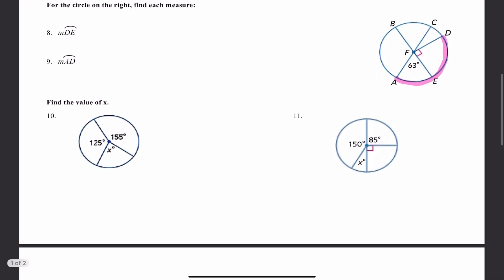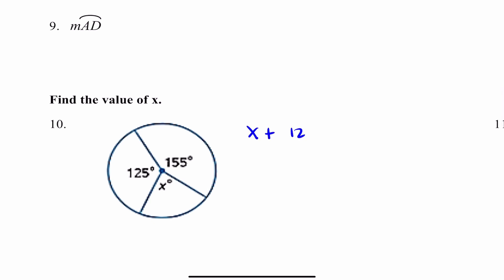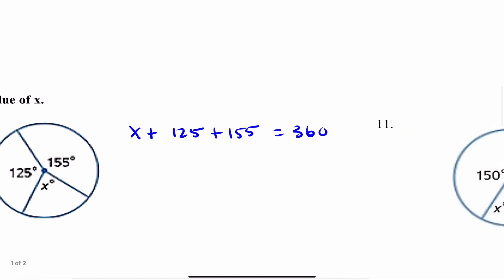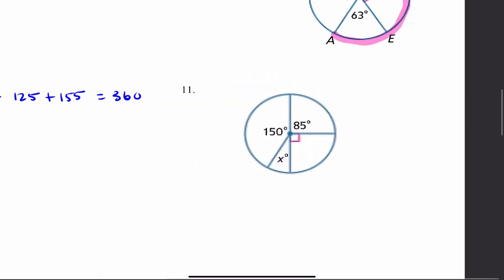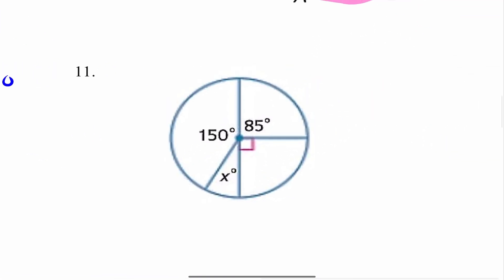Number 10: find the value of X. We have central angles here. All you need to know is that when you add up the central angles, they must equal 360 degrees. So: X + 125 + 155 = 360, then do the algebra. Number 11 is the same idea — just know that one angle is 90 degrees. Create an equation, set it equal to 360, and solve for X.